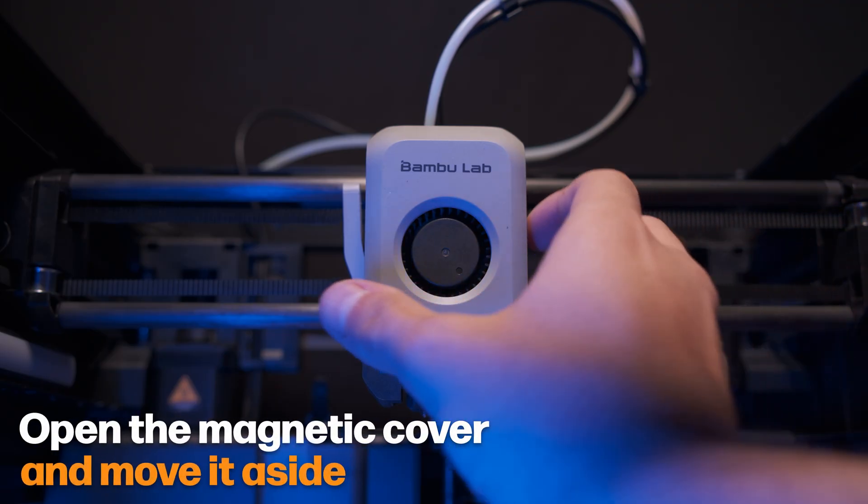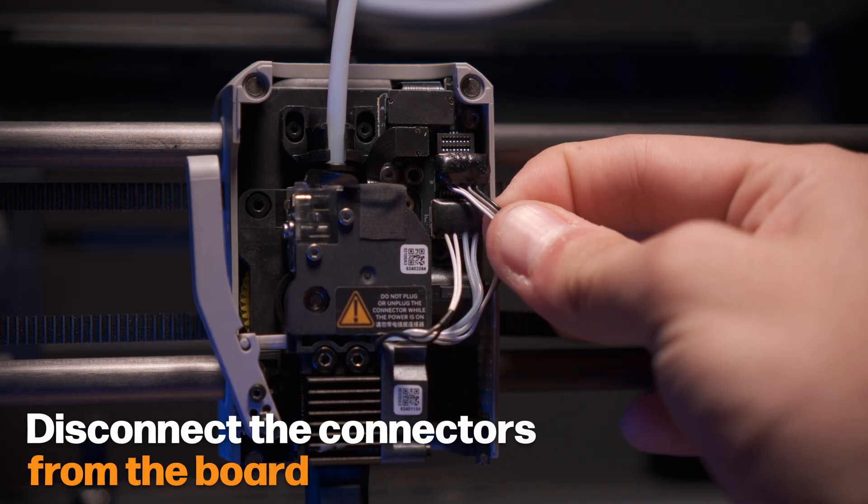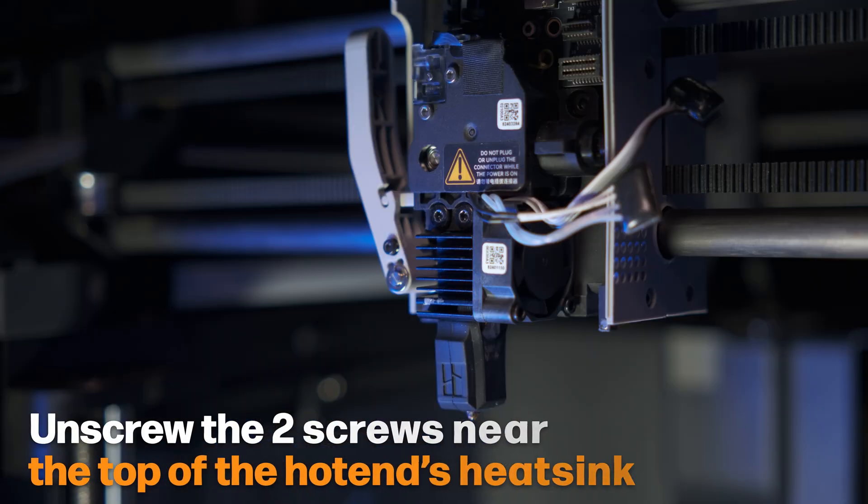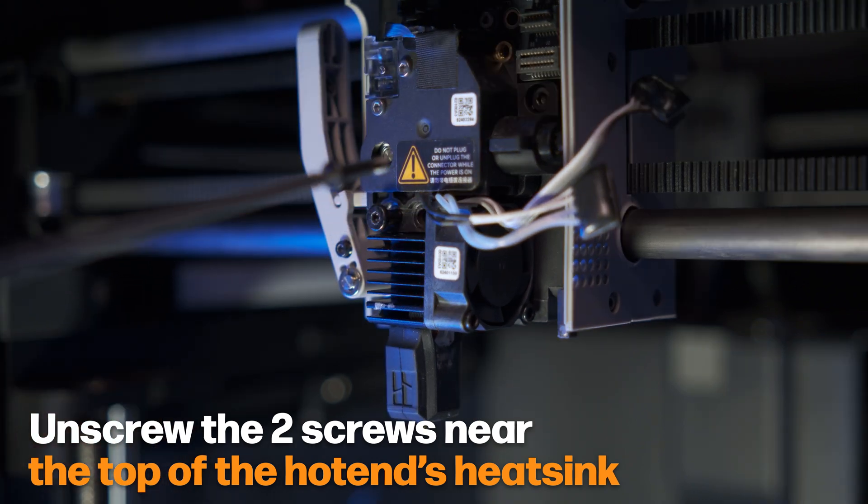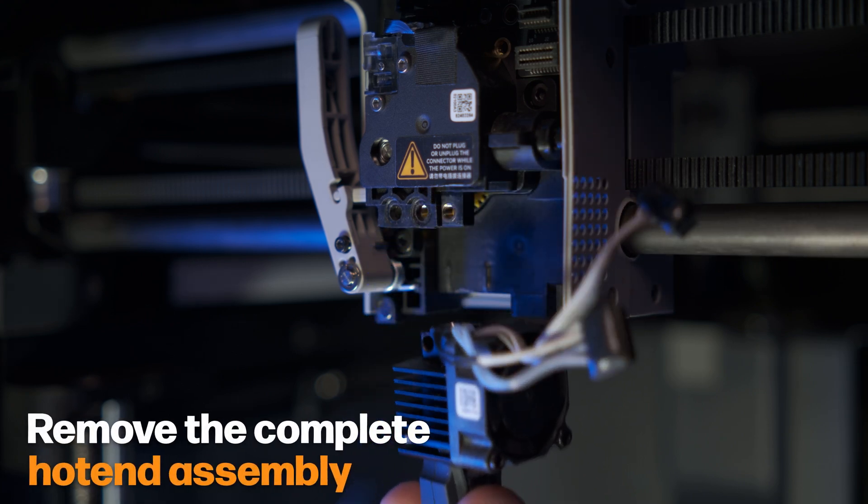You can open the magnetic cover and move it aside. Gently remove the plug of the cooling fan, plug of the ceramic heater. Use the 2mm Allen key to unscrew the two screws that are near the top of the nozzle's heat sink. Carefully and gently move the wires out of the plastic wire clip and remove the complete hotend assembly.